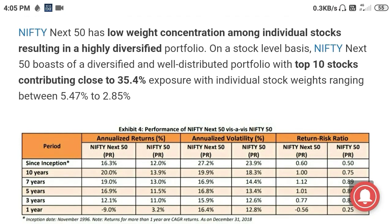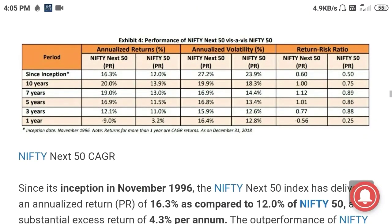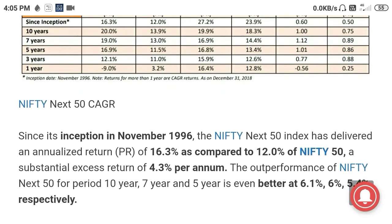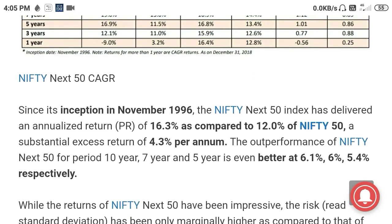In this index, the top 10 stocks contribute about 35%, and no single stock has over-exposure — unlike Nifty 50. Comparing returns between Nifty Next 50 and Nifty 50: since inception, Nifty Next 50 has given a return of around 16% while Nifty 50 has given 12%, meaning Next 50 is beating Nifty 50 by nearly 4%. In the last 10 years, it has outperformed the Nifty index.